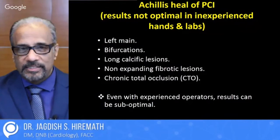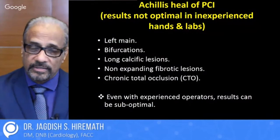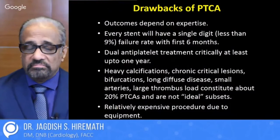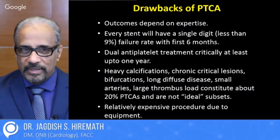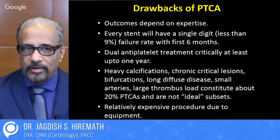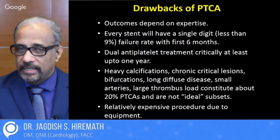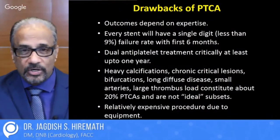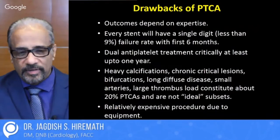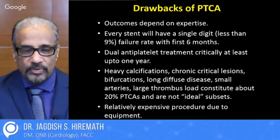In these cases, inexperienced people will suffer and sometimes even experienced operators — the results may not be optimal. Drawbacks are because the results depend on expertise, so you need to have a reasonable expertise before you perform angioplasties. Every stent will have a single-digit failure rate up to 5 to 7%, about 9% overall in the first six months. Dual antiplatelet treatment is critical up to one year, and if somebody is not able to take it for bleeding risk, angioplasty is not the option for that patient. Very heavy calcification, chronic total occlusions, bifurcations, and long diffuse lesions mean less successful angioplasty.